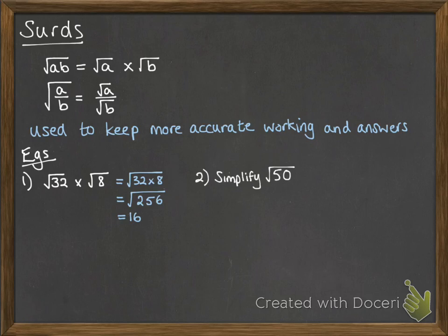Simplify the following: the square root of 50. We're looking for a factor of 50 that is also a square number so that we can make this a little easier. And that's 25. So 50 is the same as 25 times 2. The reason I've picked 25 is because you can square root it. If we separate them, that would be the square root of 25 times the square root of 2, which will be 5 root 2.